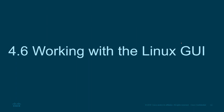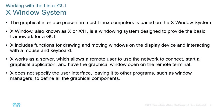Moving forward, let's look at working with the GUI inside Linux. The graphical interface in most versions of Linux is based on a system called X Windows, also known as X or X11. It's a windowing system providing basic frameworks for a GUI, including functions for drawing and moving windows, and handling mouse and keyboard input. X works as a server, allowing a remote user to connect over the network and have a graphical window open on the remote terminal. X doesn't specify the user interface — it leaves that to window managers.